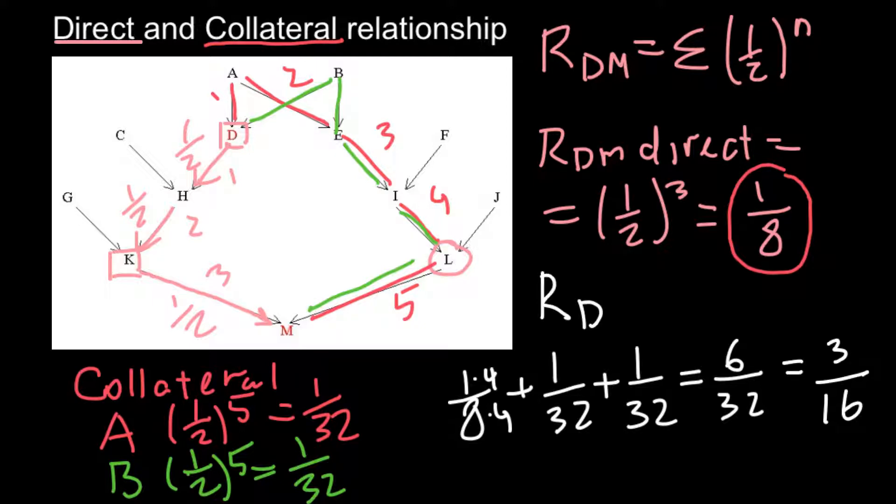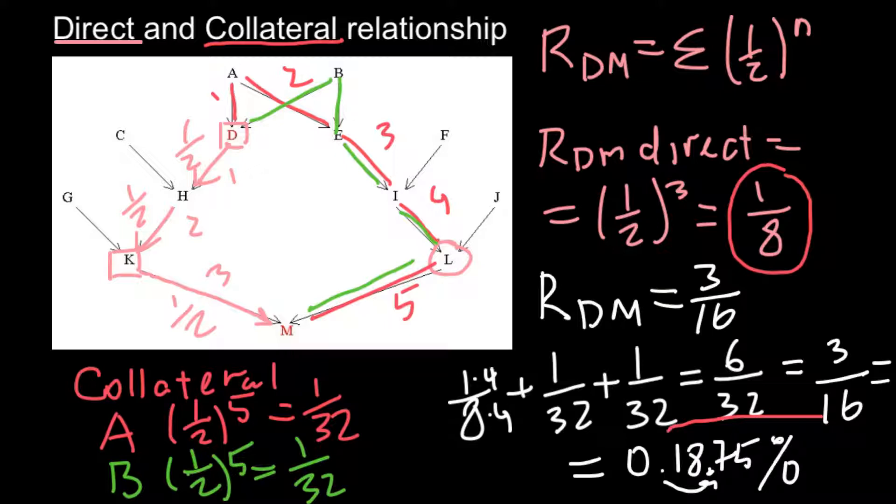So R of D and M would equal to 3 sixteenths. And if we need an answer in decimal form, we have to divide 3 by 16. And we are going to get 0.1875. And if we need an answer in percentage form, we just have to multiply this number by 100. And this is going to be our answer. That coefficient of relationship between individual D and M would be 18.75%. We use in our calculation both direct and collateral relationship. And we add all this relationship. This is how we got our final answer.